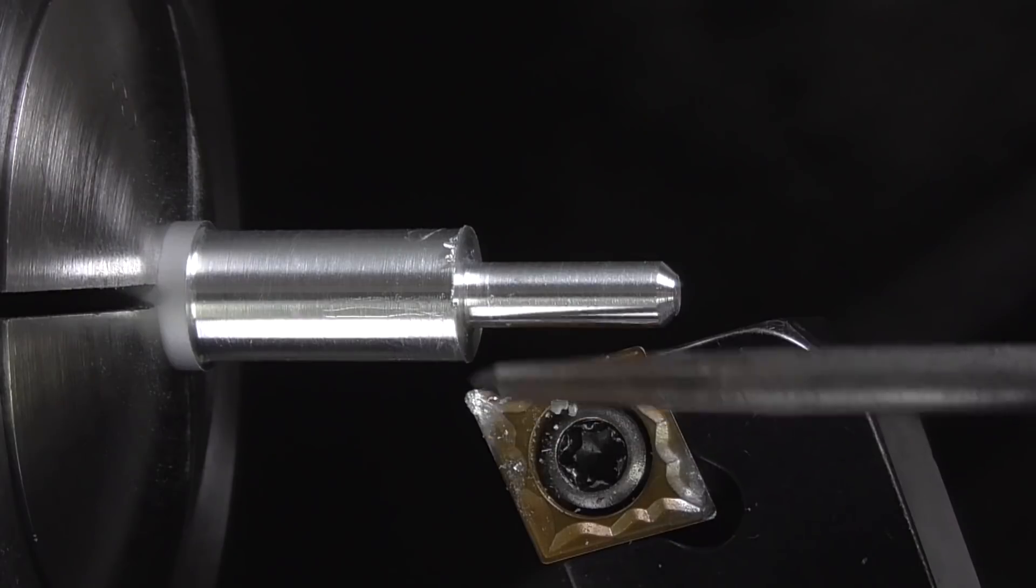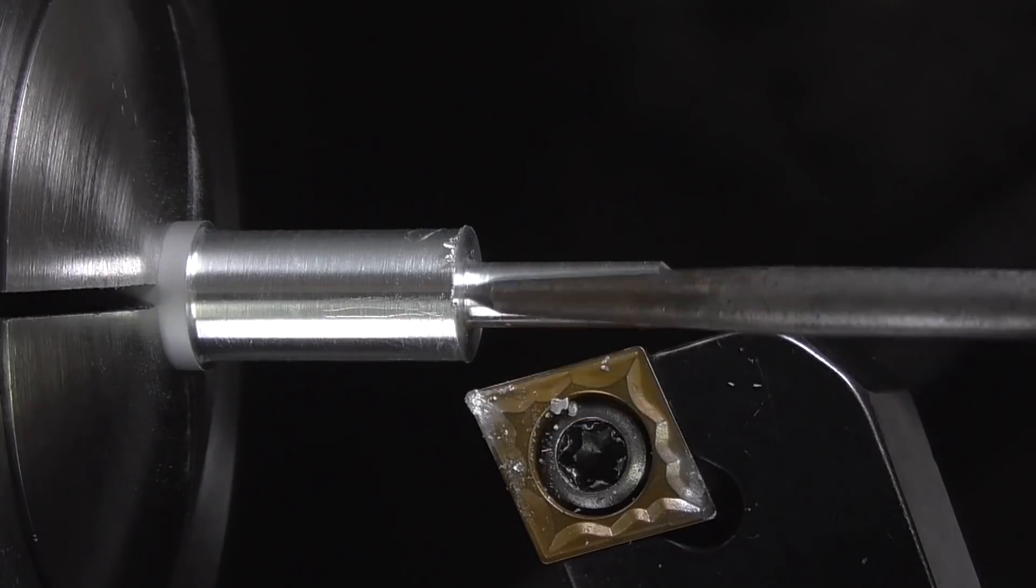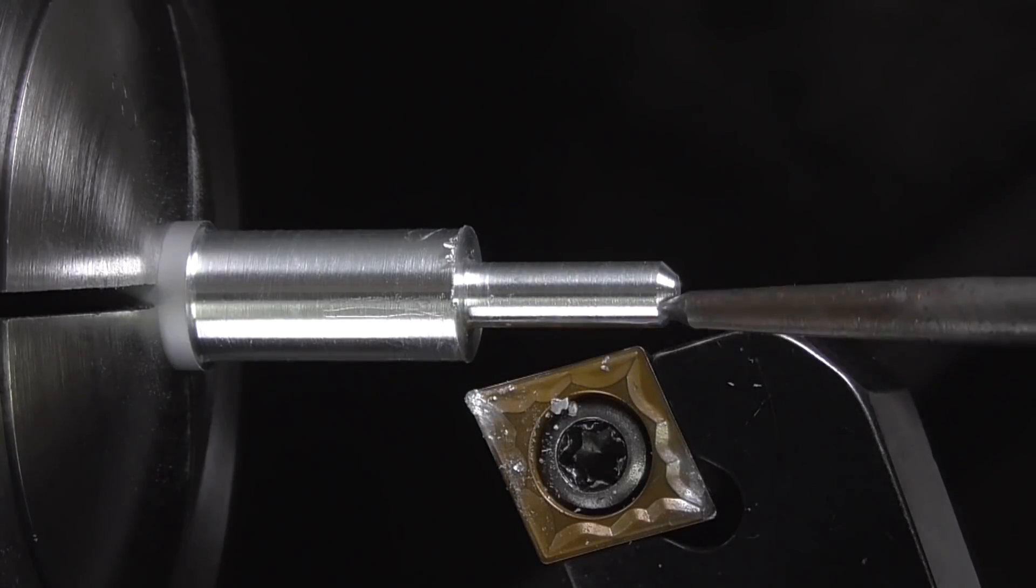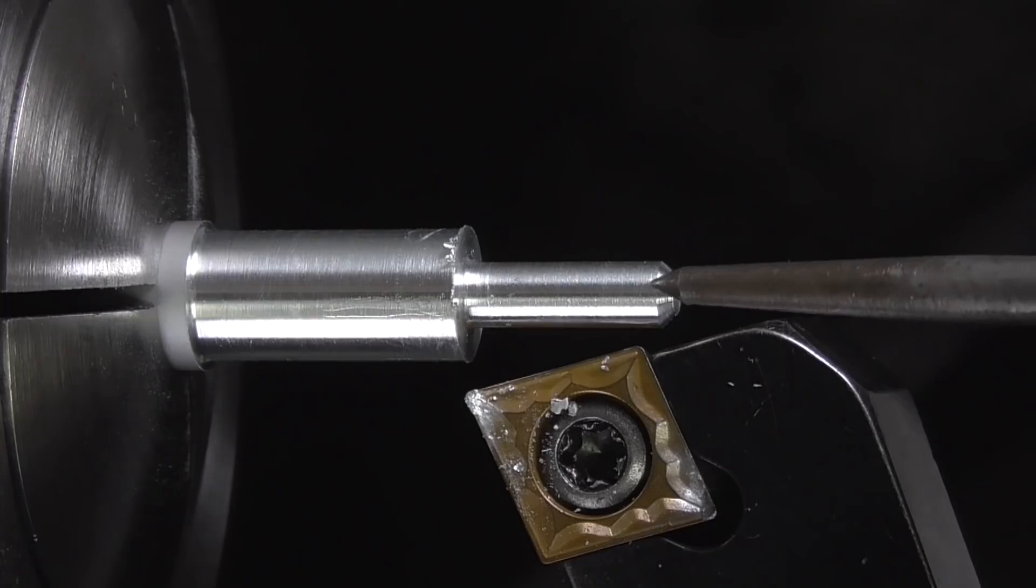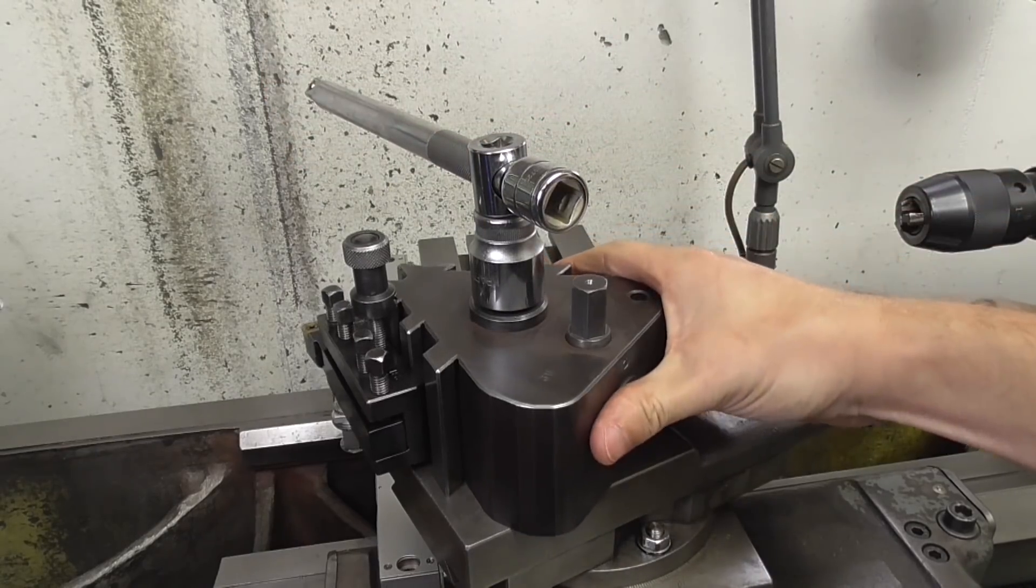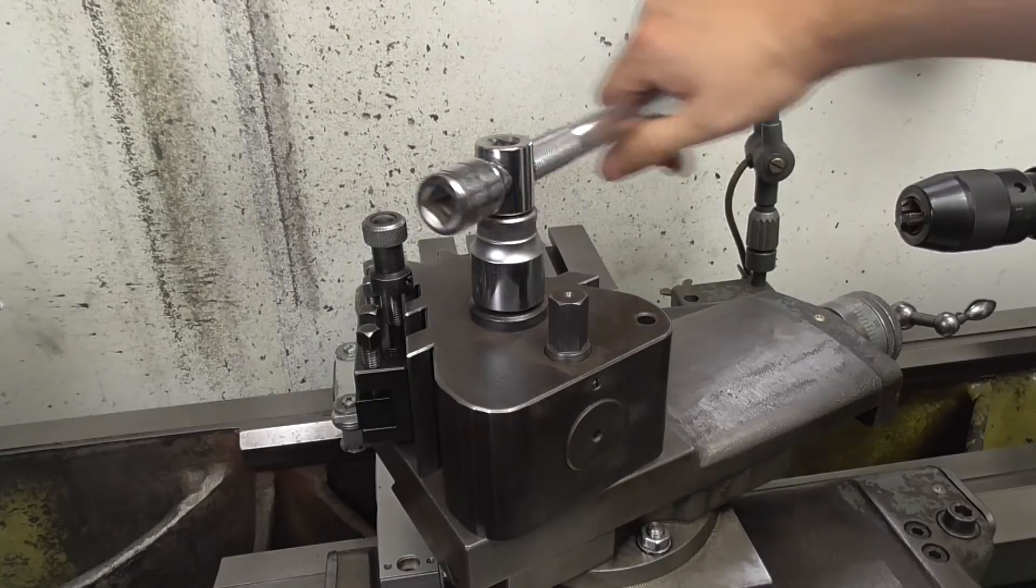I can't turn the cone like this. The cutting edge of the tool can't reach the part because the tool holder is in the way. I need to turn the tool post 20 degrees in the other direction to make it possible.